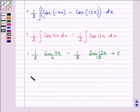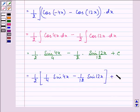Taking out 1/2 common, we are left with 1/2 times (1/4 sin 4x minus 1/12 sin 12x) plus c.